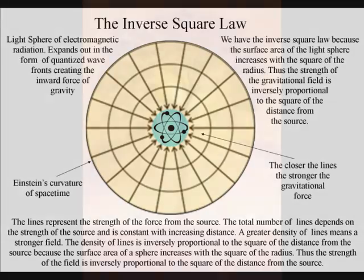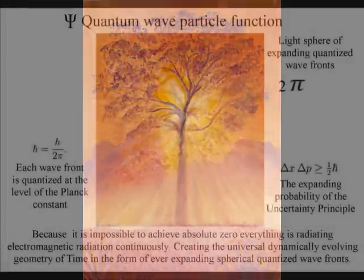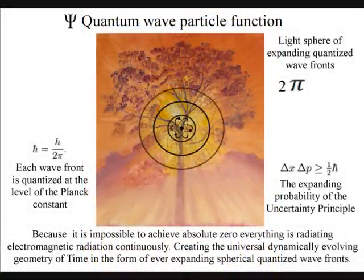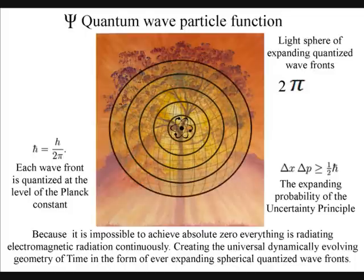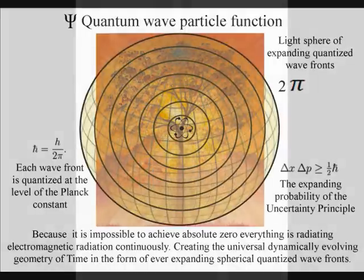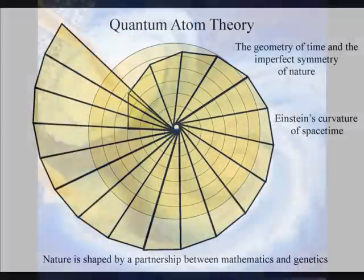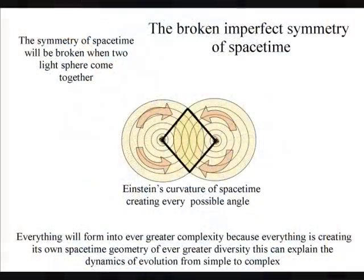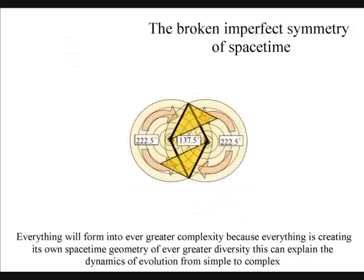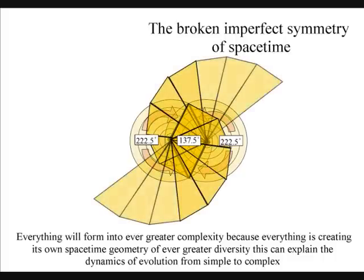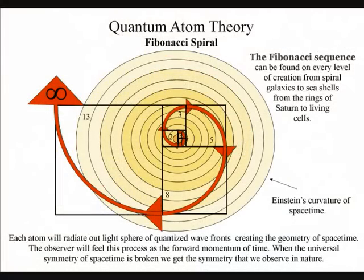Because it is impossible to achieve absolute zero, everything is radiating electromagnetic radiation continuously, creating the universal dynamically evolving geometry of time in the form of ever-expanding spherical quantized wavefronts. The observer will feel this as the forward momentum of time, and will see patterns of beautiful symmetry on every level of creation, from sea shells to spiral galaxies. The atoms will distort the geometry of space-time, creating mathematical patterns of every conceivable shape. The same basic method of pattern formation, the same mechanism of symmetry breaking, governs the whole universe of organic and non-organic matter. Only a slight distortion in the space-time symmetry will spiral out, creating the visual patterns of our universe.